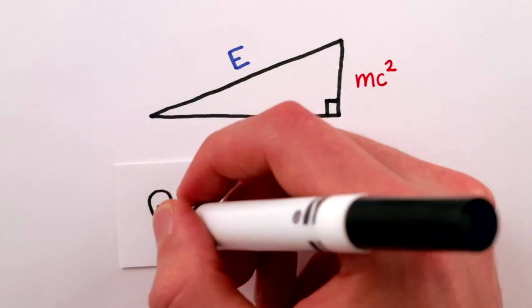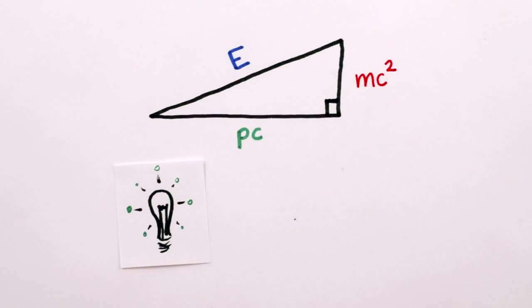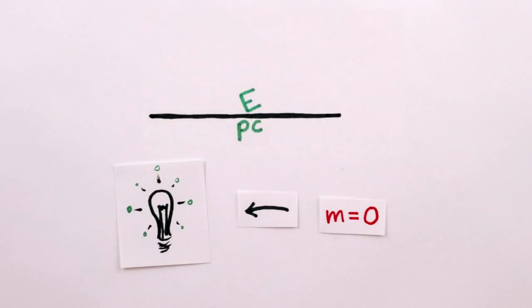On the other hand, if the particle in question is massless, like light, then mass is zero and we get E equals p times c.